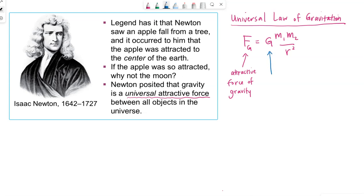Capital G is the universal gravitational constant. The value of this constant is 6.67 times 10 to the negative 11. It does have units of Newton meters squared over kilograms squared.